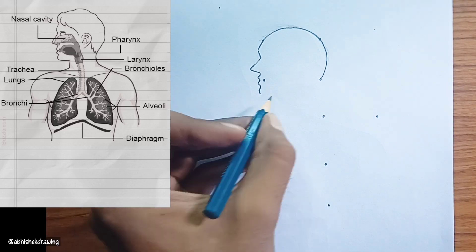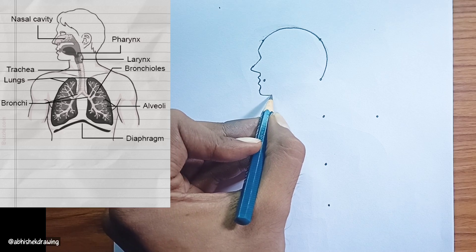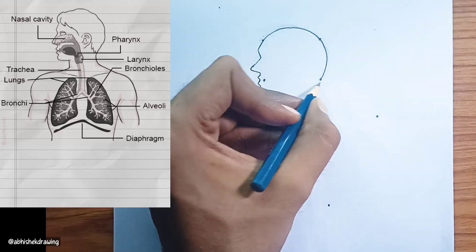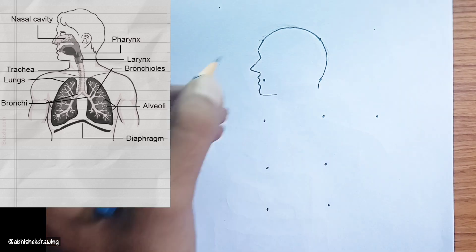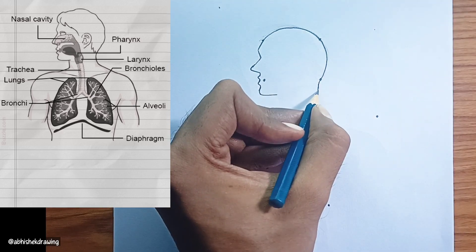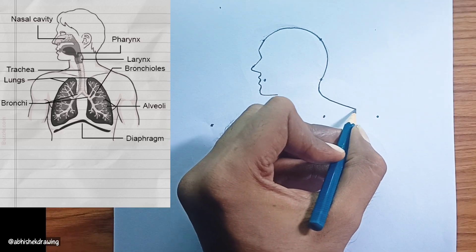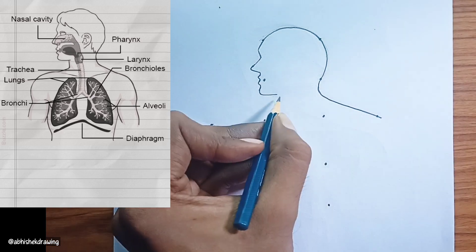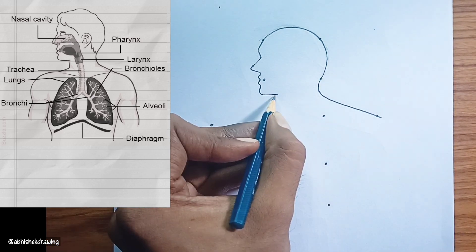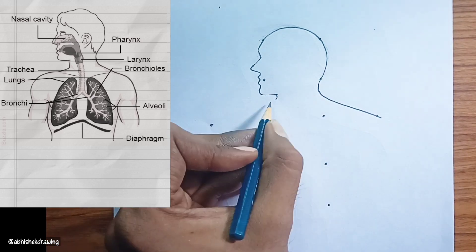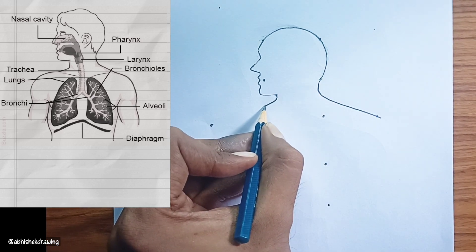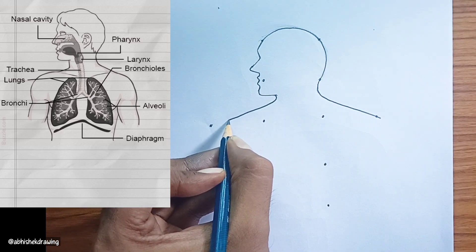Trachea. Also known as the windpipe, the trachea is a strong cartilaginous tube that extends from the larynx and branches into the bronchi. It provides a clear airway for air to reach the lungs.